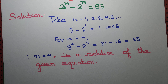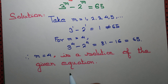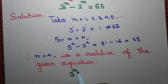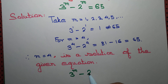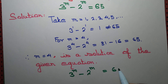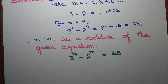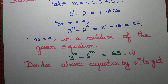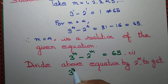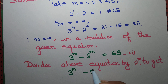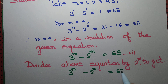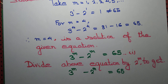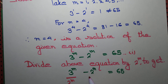The obvious question is, do we have any other solution? So let's write the equation once again: 3 to the power m minus 2 to the power m equal to 65. We divide this equation by 2 to the power m throughout. What's the advantage? We'll see soon.